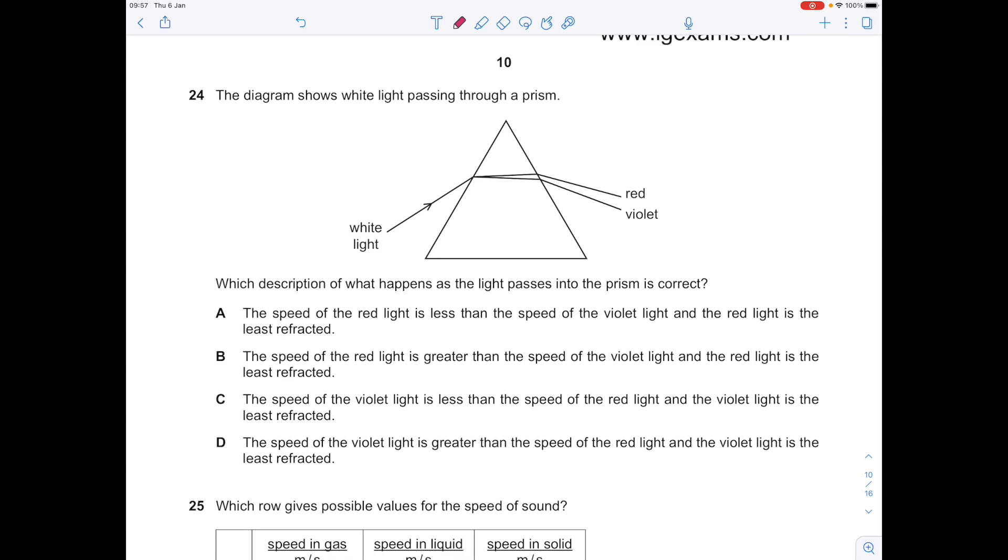The diagram shows white light passing through a prism. Which description of what happens as the light passes into the prism is correct? We can use this diagram to help us a little bit before we get going. Notice you can look at how much refraction has taken place: violet has been refracted the most, red has been refracted the least.